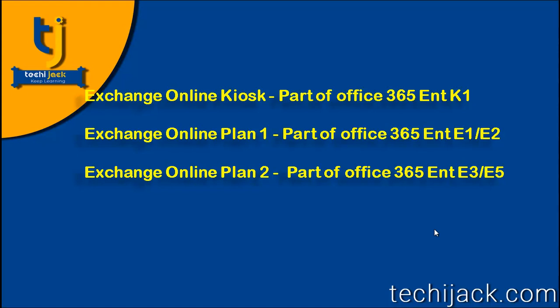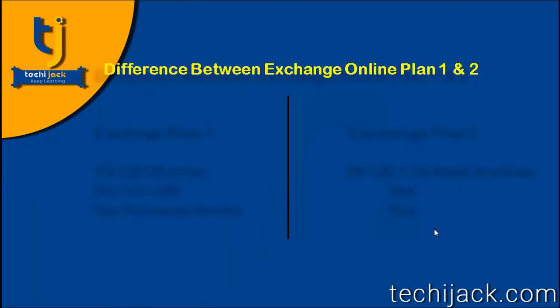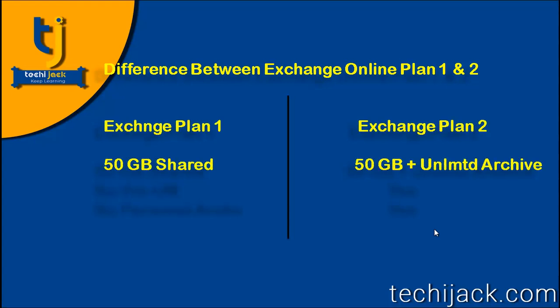So what extra features do you get with Exchange Online Plan 2? Regarding storage, Exchange Online Plan 1 gives you 50 GB shared space across your primary and archive mailboxes combined. If you need a large amount of space for your archives, you should go for Exchange Online Plan 2, which gives you 50 GB for your primary mailbox and unlimited space for archive mailboxes.